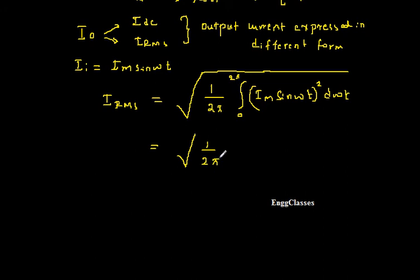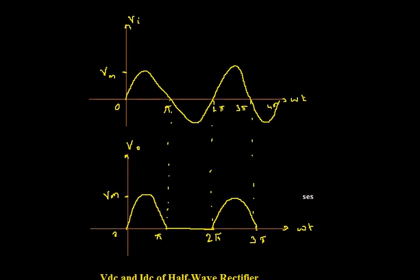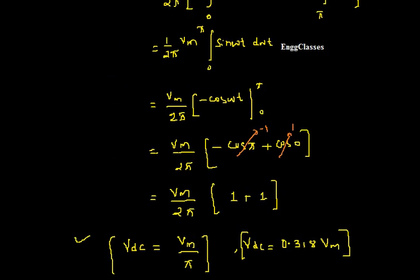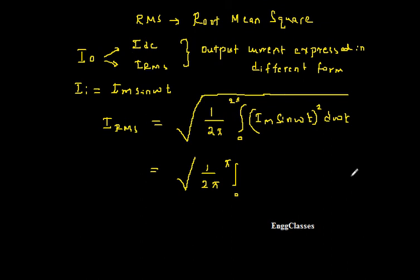This is 1 over 2π, and I will change the integration limit from 0 to 2π down to 0 to π only. Because if I consider the output waveform of the half-wave rectifier, the output is obtained only for one half cycle, that is 0 to π. From π to 2π the output is 0, hence I am not writing it. So inside I have Im² · sin²(ωt) d(ωt) with limits 0 to π.